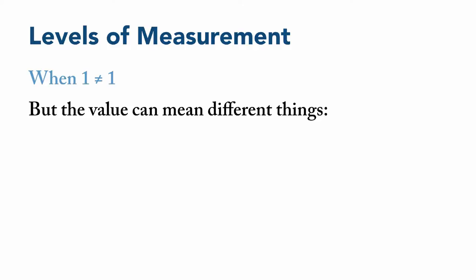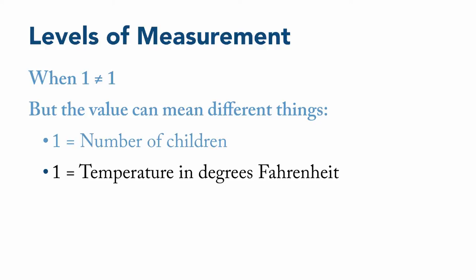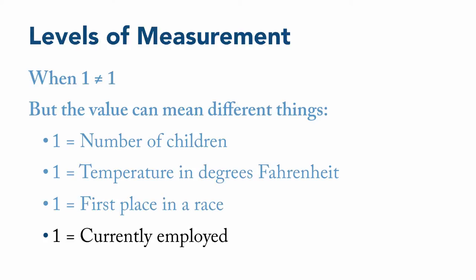For example, on one variable, one might be the number of children a person has. But on another variable, one might be temperature in degrees Fahrenheit, or one might mean first place in a race, or maybe one means that a respondent is currently employed.